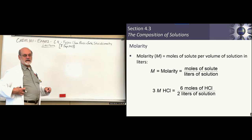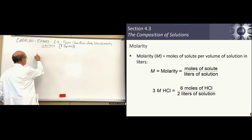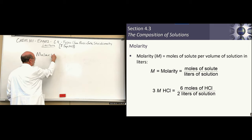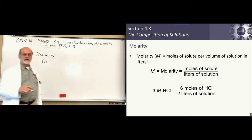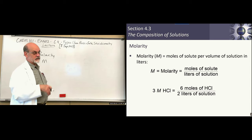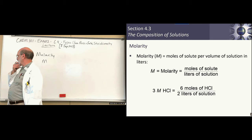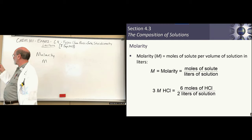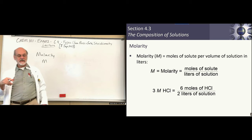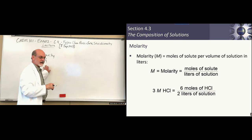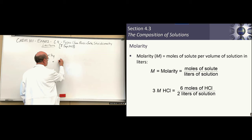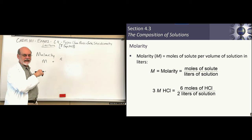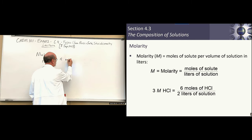We need a way of expressing concentration. Probably the most commonly used one in chemistry is molarity, abbreviated with a capital M. There is no element on the periodic table with just the single symbol M, so that's safe to use. One capital M is molarity. Molarity is the number of moles of solute — abbreviated with a little n — per liter of solution.